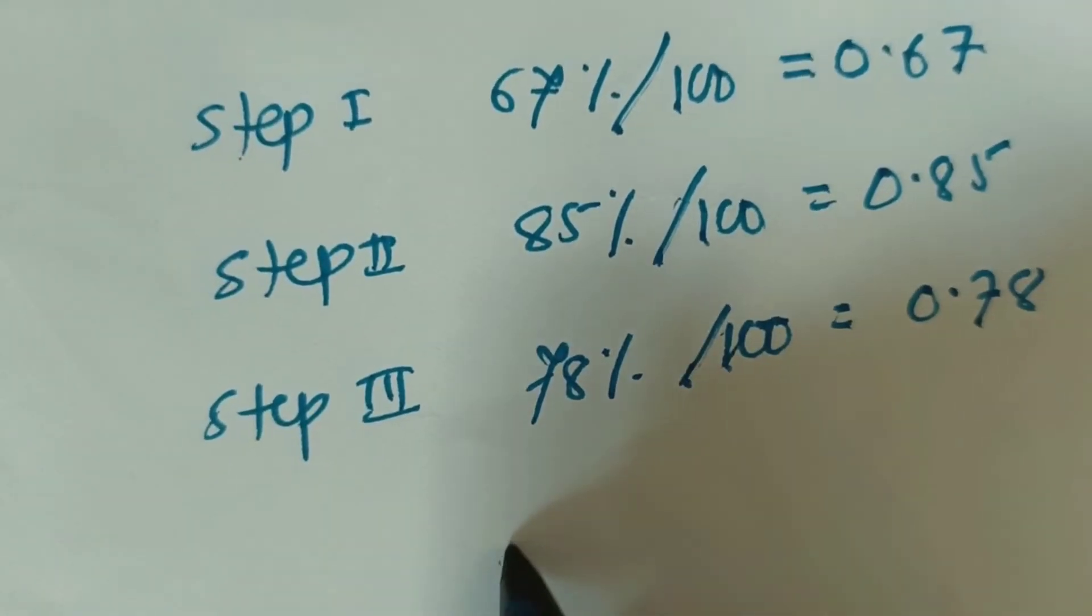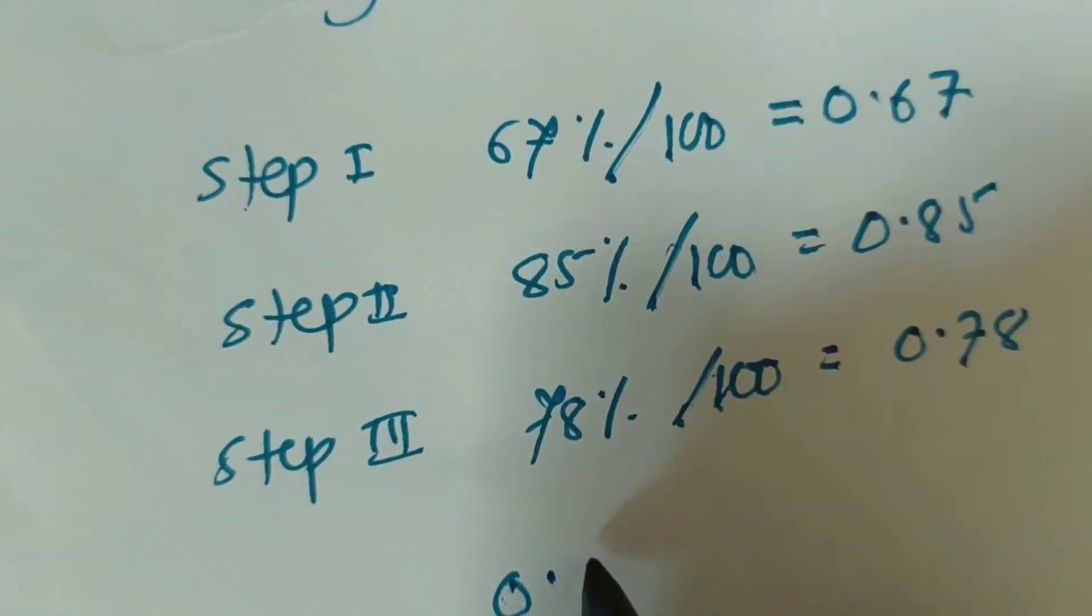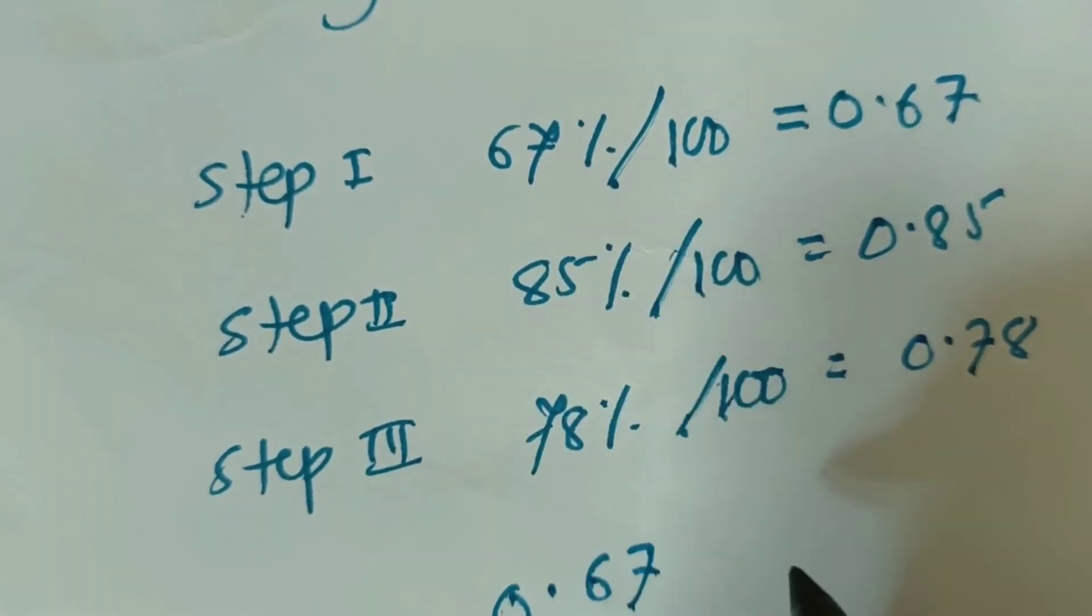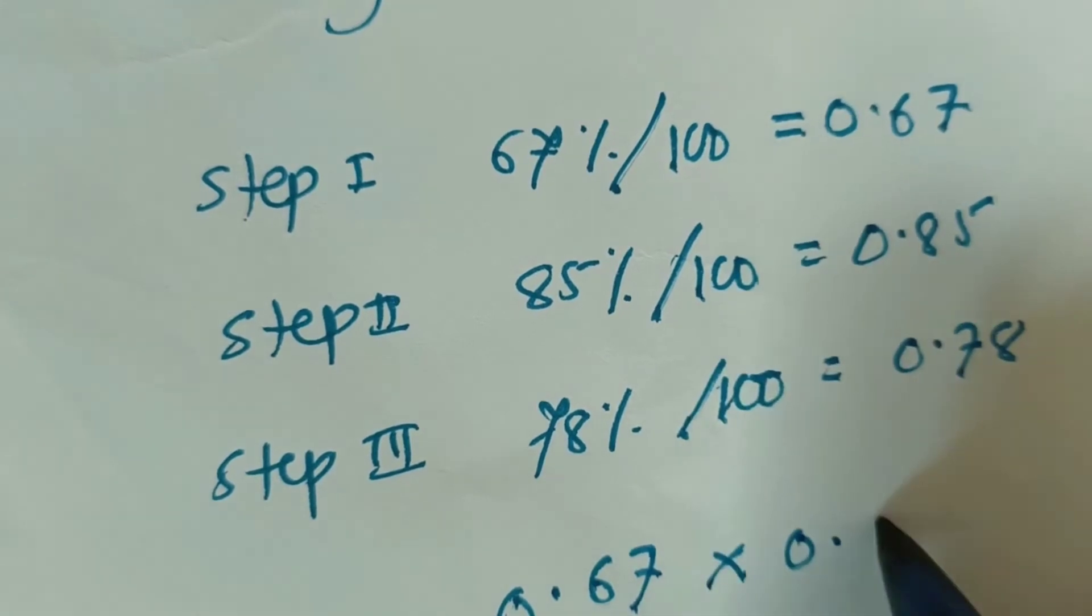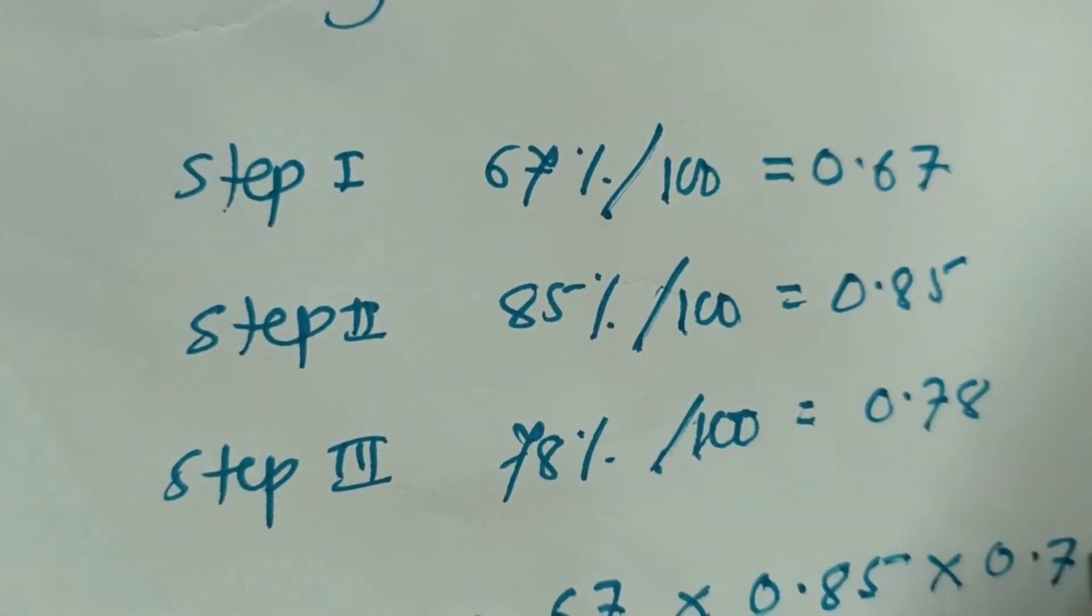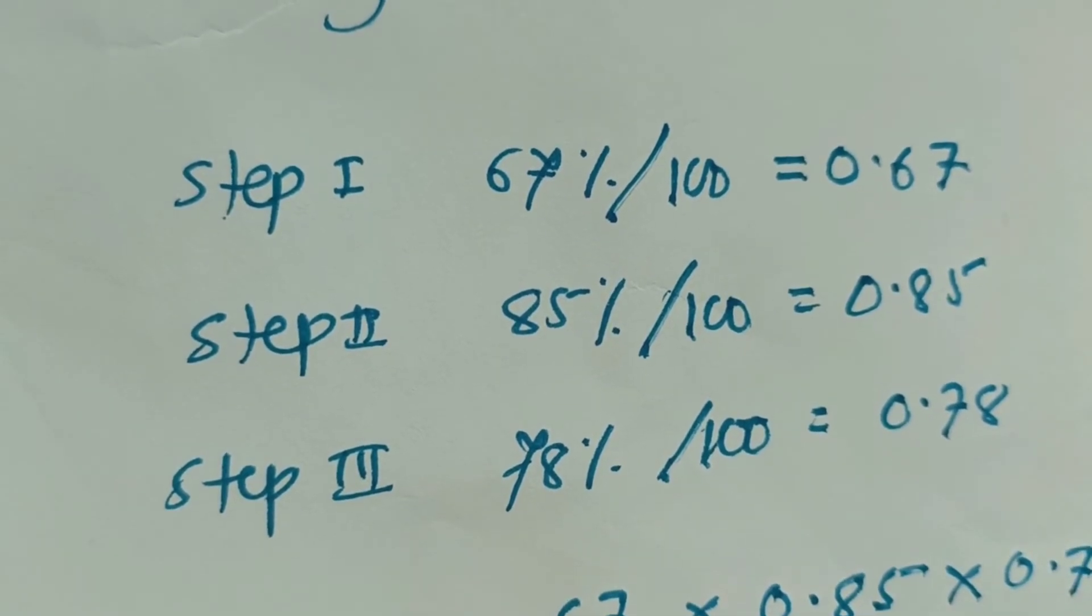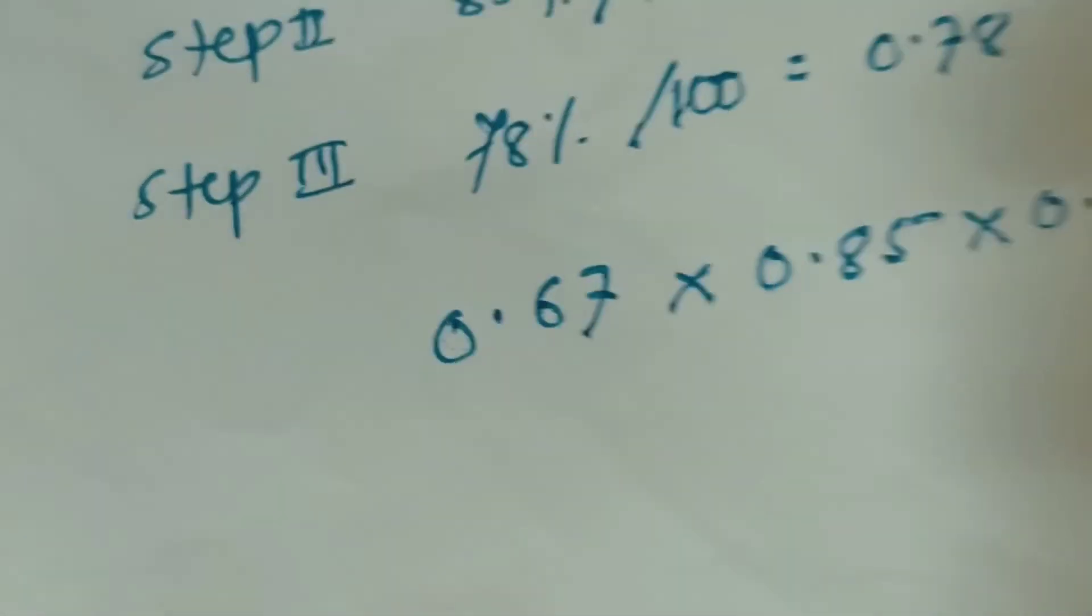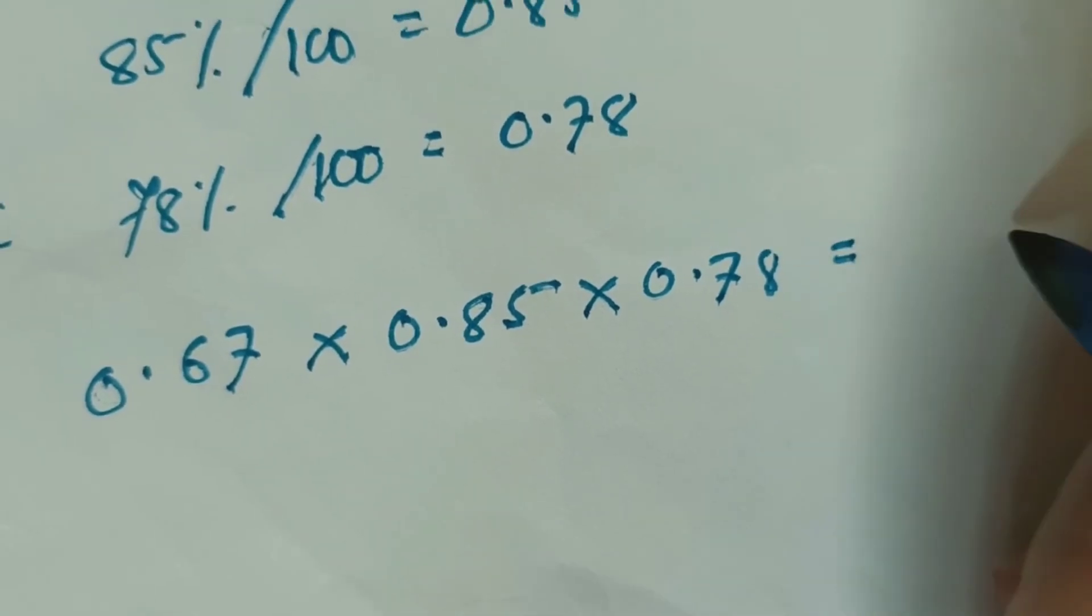Now all these numbers—0.67 into 0.85 into 0.78—equals to whatever number appears. That number, suppose X, is multiplied by 100. That will be the overall yield of the multi-step reaction.